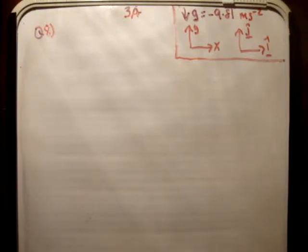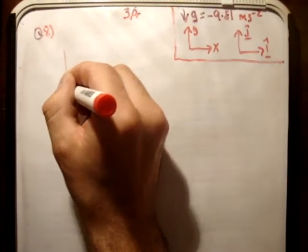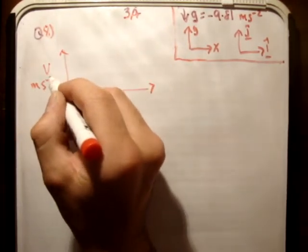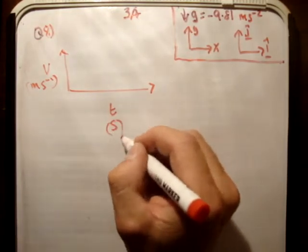So the first thing we know of course is all the quantities in the top right which haven't changed so far. Next we sketch the motion on a velocity time diagram. V measured in meters per second, time measured in seconds.